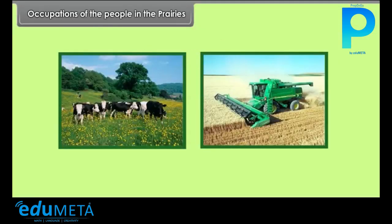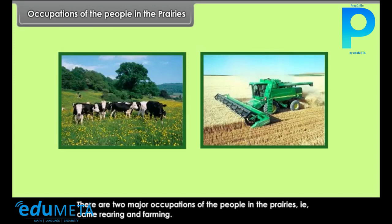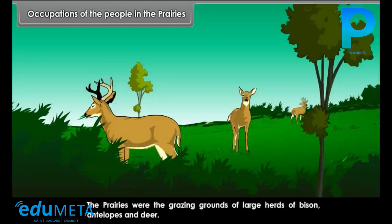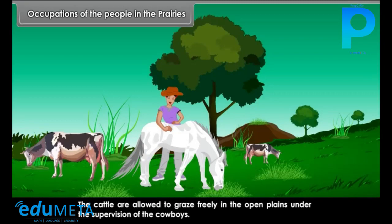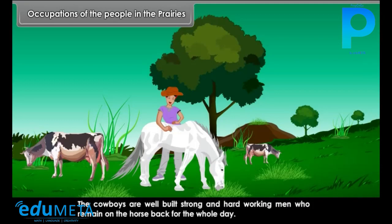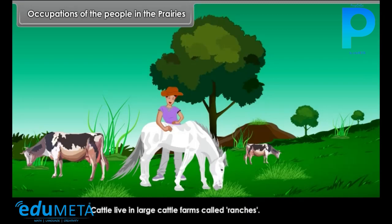There are two major occupations of the people in the Prairies: cattle rearing and farming. The Prairies were the grazing grounds of large herds of bison, antelopes and deer. The cattle are allowed to graze freely in the open plains under the supervision of the cowboys. The cowboys are well-built, strong and hard-working men who remain on horseback for the whole day. Cattle live in large cattle farms called ranches.